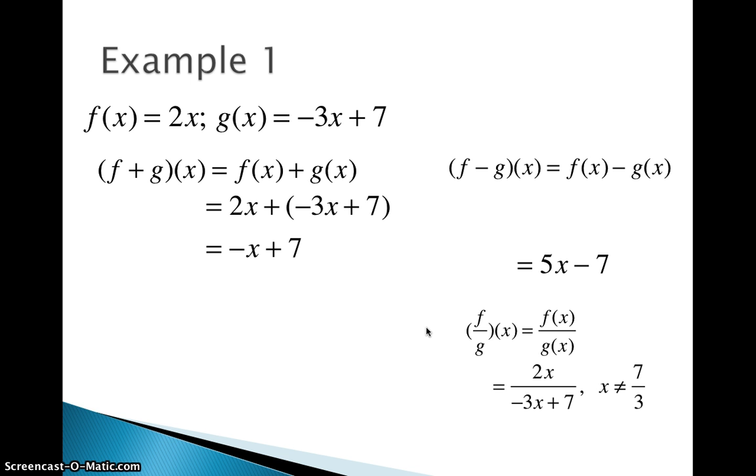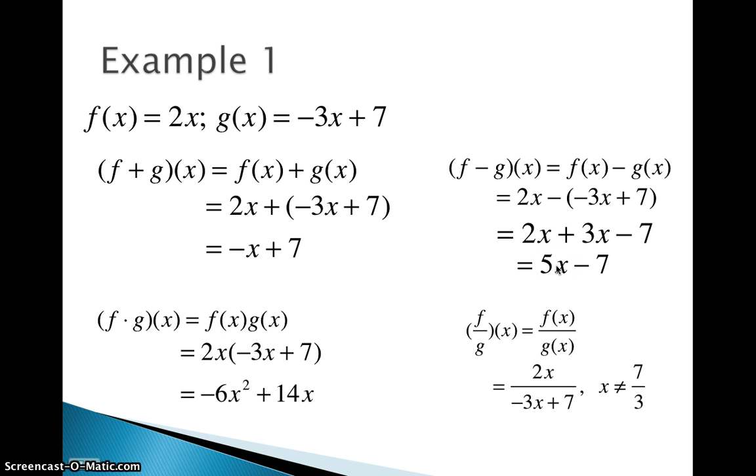Subtraction now. We'll do 2x minus negative 3x plus 7. But be careful. You have to distribute your negative sign into the parentheses. And then when you combine like terms here, your final answer is 5x minus 7. Okay, multiplication. So we multiply 2x times negative 3x plus 7. We distribute the 2x into the parentheses. And we get negative 6x squared plus 14x.